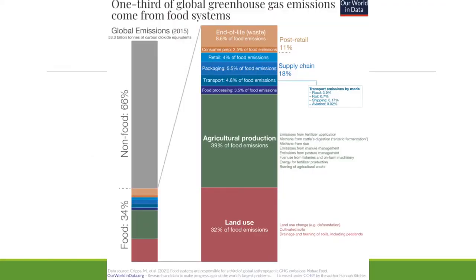One third of global greenhouse gas emissions comes from the food system. One third of that comes from land use, and the second third comes from agricultural production. Food processing, transport, packaging, retail, and consumer preparation contribute a much lower share to global greenhouse gas emissions. However, waste accounts for around 9% to 11% of greenhouse gas emissions. This is why one of our aims is to reduce waste.